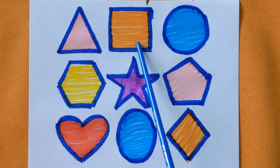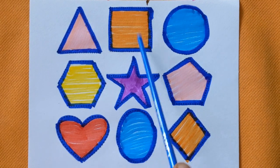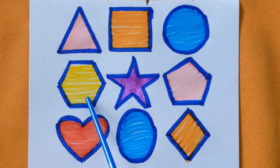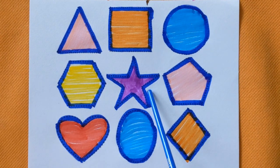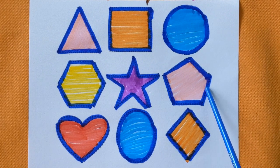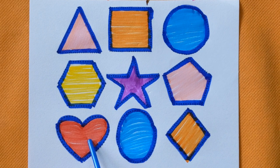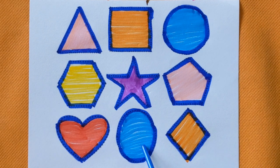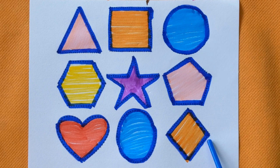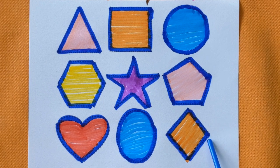Triangle, pink color. This is square shape with orange color. Circle, sky blue color. This is hexagon, yellow color. Star shape with the purple color. Pentagon, pink color. Heart shape, red color. Oval with the sky blue color. Rhombus with the orange color.